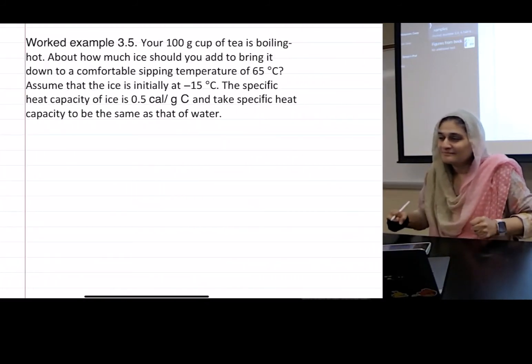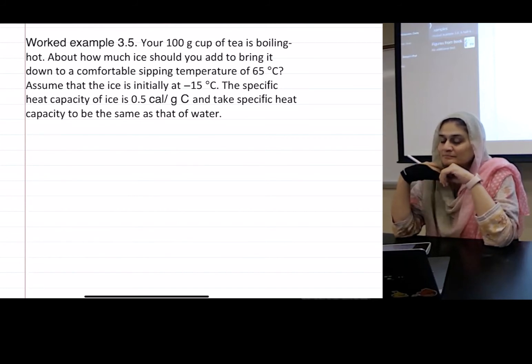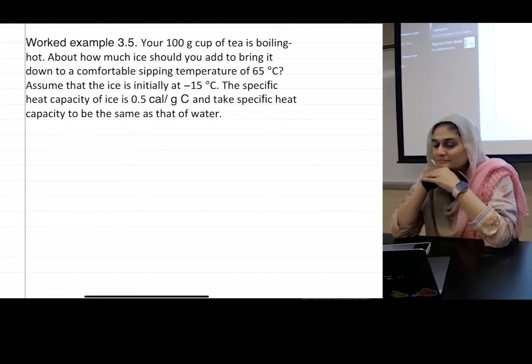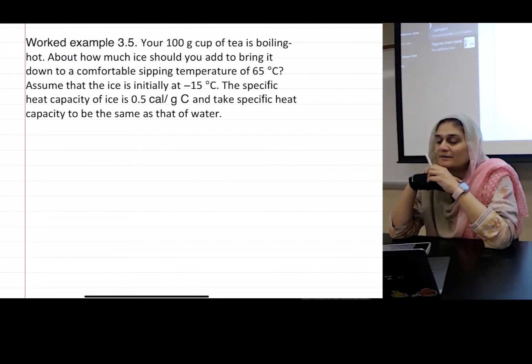Okay, next question. Your 100 gram cup of tea is boiling hot. About how much ice should you add to bring it down to a comfortable sipping temperature of 65 degrees Celsius? Assume that the ice is initially at negative 15 degrees Celsius. The specific heat capacity of ice is 0.5 cal per gram Celsius, and take specific heat capacity to be the same as that of water.